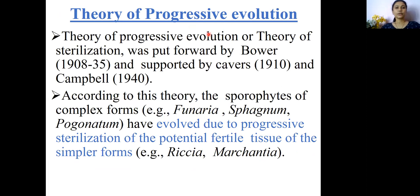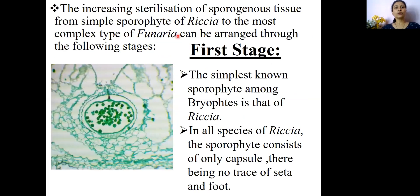According to the theory of progressive evolution, the evolution of the sporophyte in bryophytes has taken place from Riccia. Riccia is considered the most simplest sporophytic structure, having potential fertile tissues compared to other advanced bryophytic plants like Funaria, Sphagnum, etc. This theory of progressive evolution can be discussed within eight different stages.